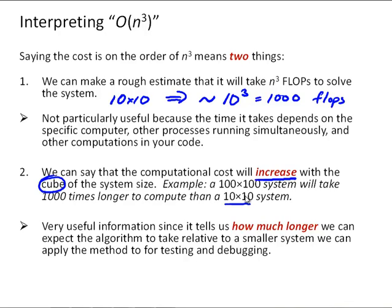And the way that we can see that is a 100 by 100 system, if we're scaling up by a factor of 10, so 10 times larger system means 10 cubed, so there's where that n cubed comes in, more flops or more computational cost. So, this is really useful information because it tells us how much longer we can expect the algorithm to take relative to a smaller system we can apply the method to for testing and debugging.